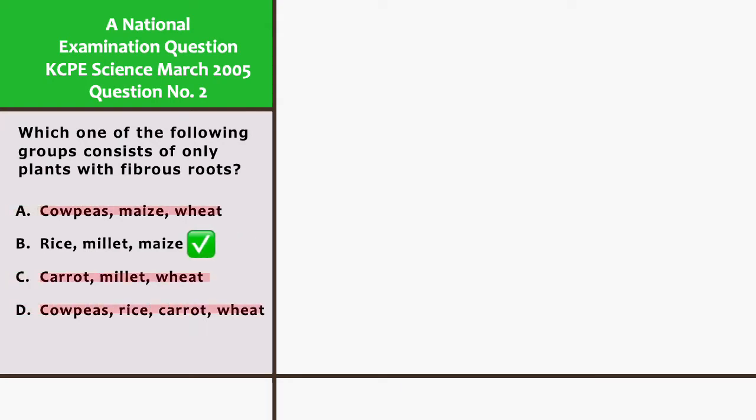The answer is B. Rice, millet, and maize have a fibrous root system.